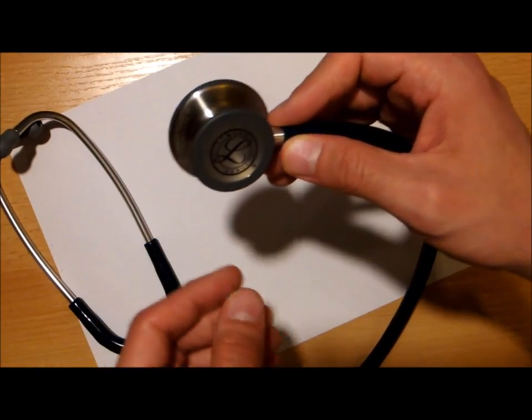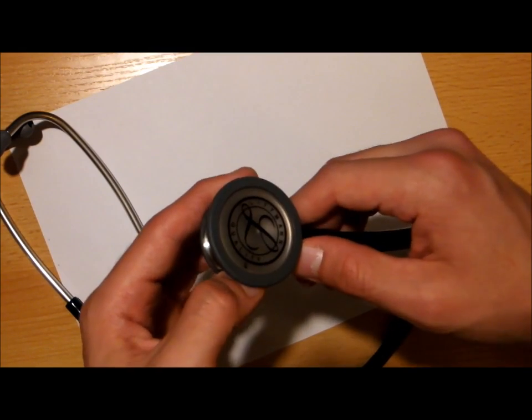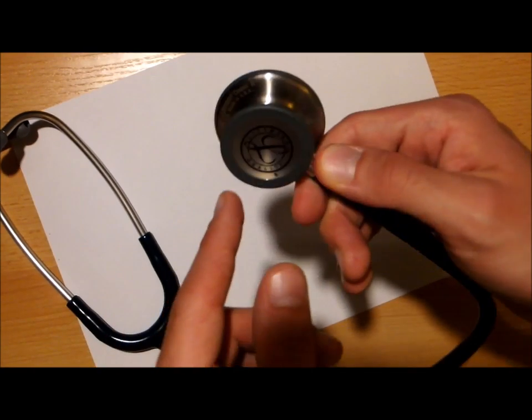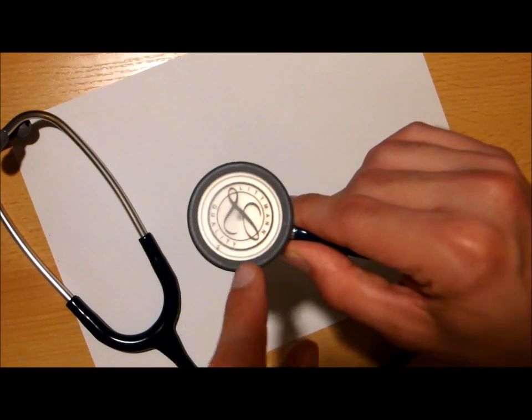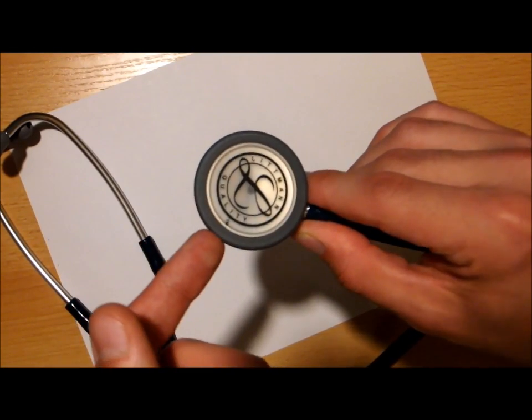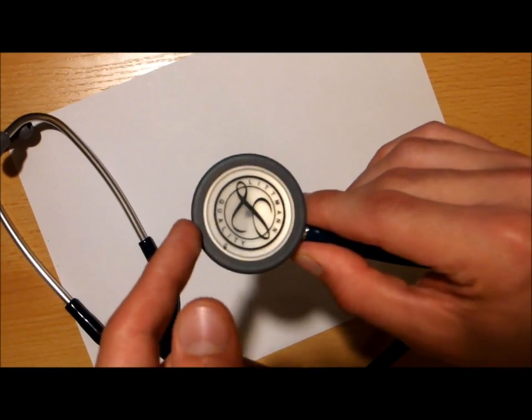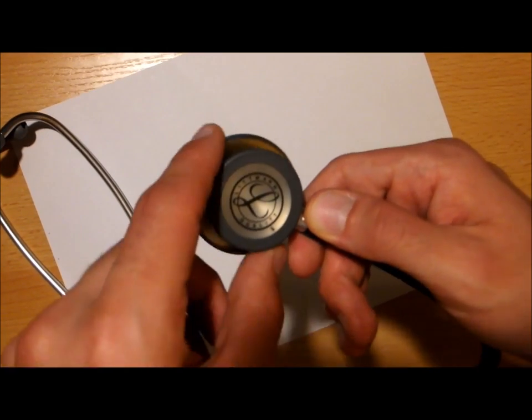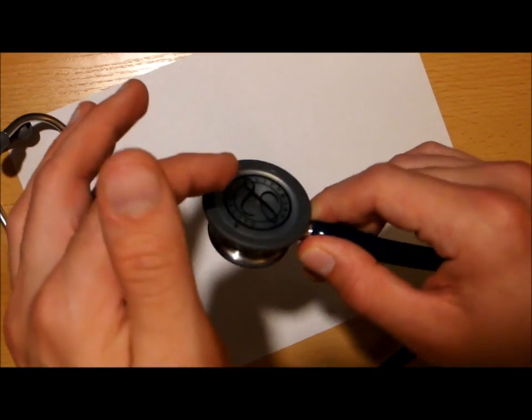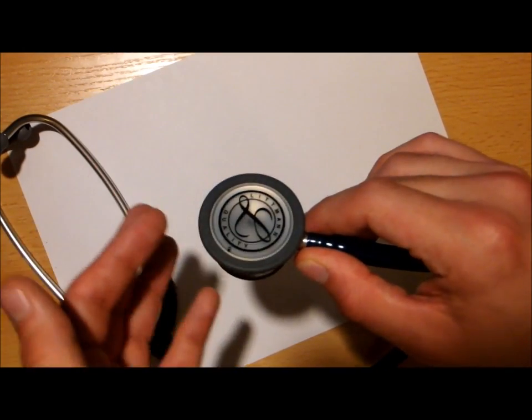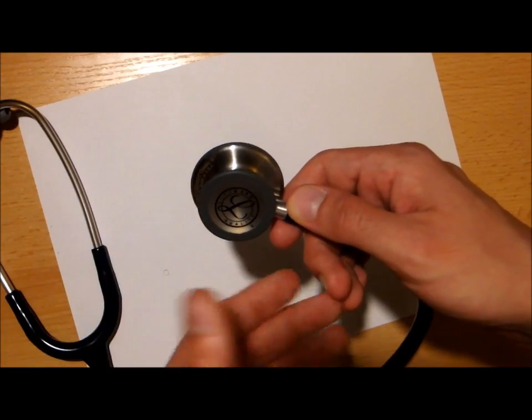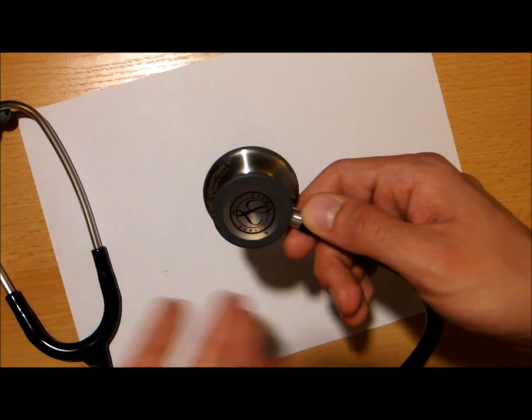I quickly noticed that this Littmann stethoscope has diaphragms on both sides. On one side we have the big versatile diaphragm, and the smaller one is for auscultating children, so it's just the smaller version of that big one in front. And I wanted to get the normal bell with a hole in it.